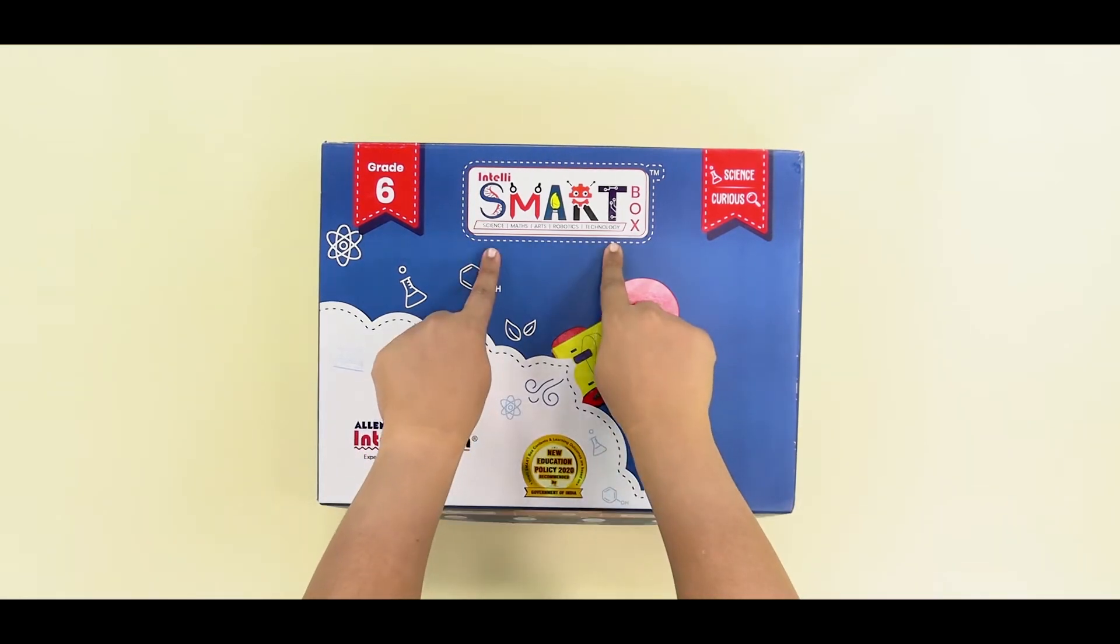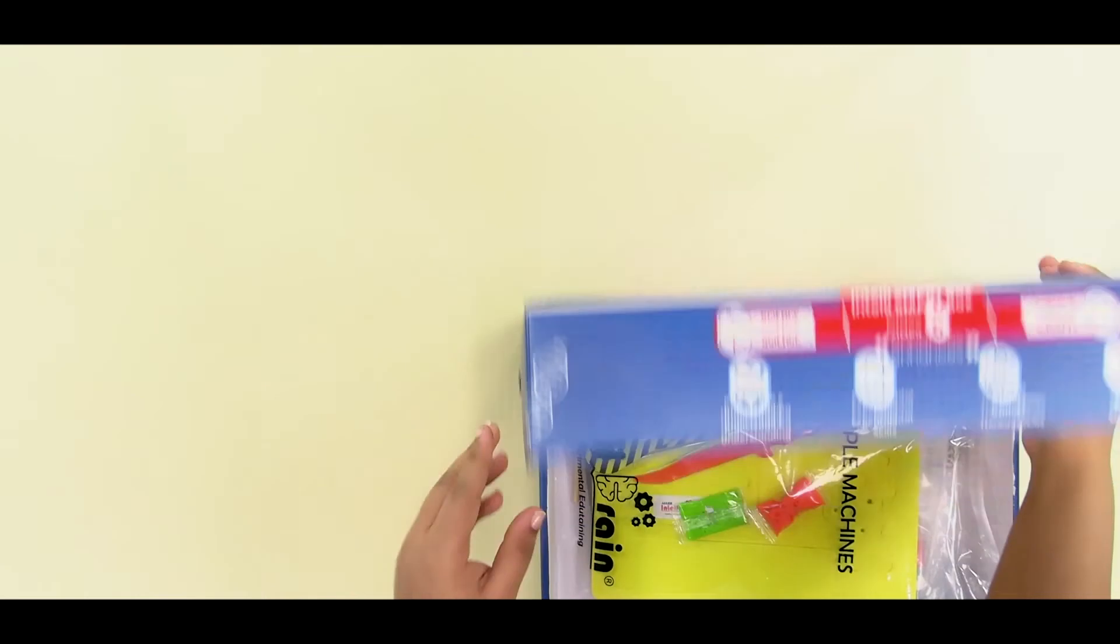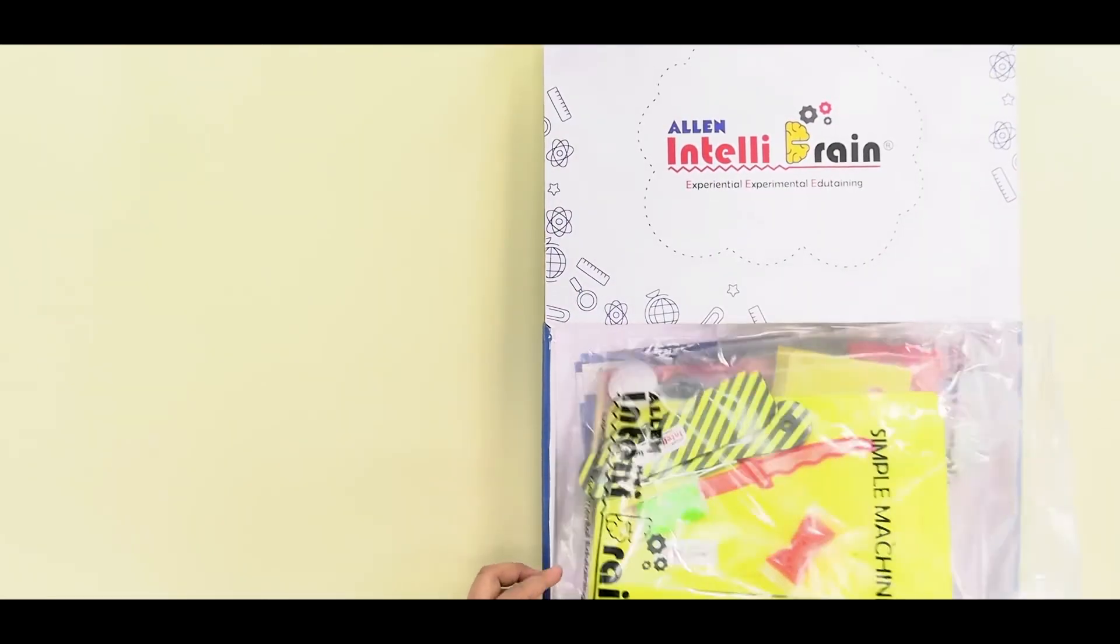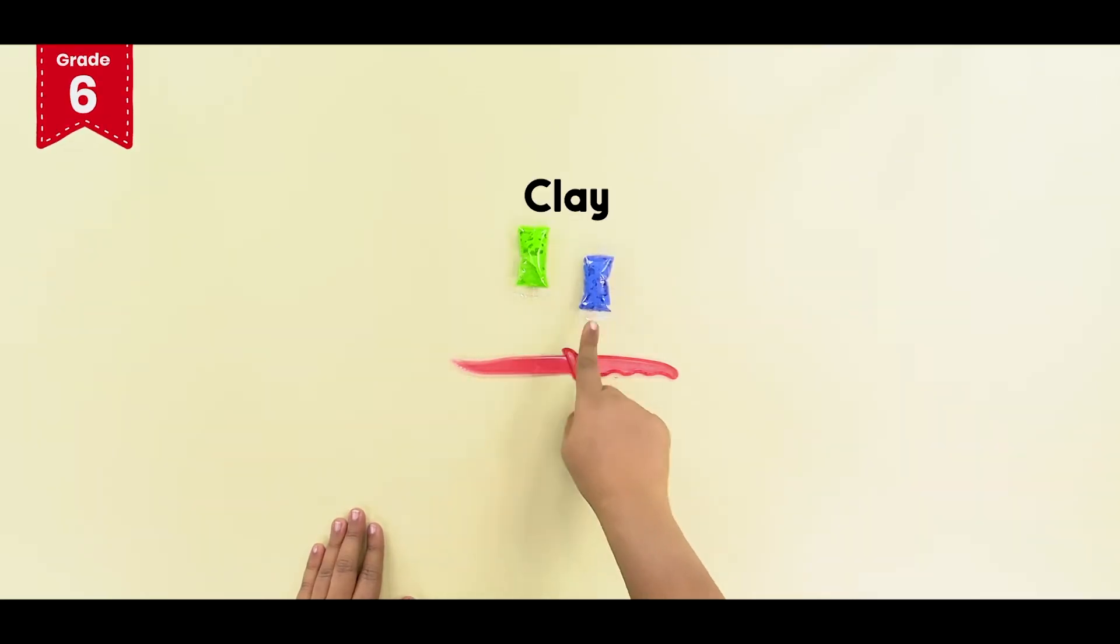From the IntelliSmart box, take out the simple machine's activity kit. Take out the clay packets and the plastic knife from the kit. Let's start with the clay.